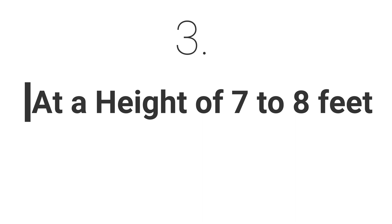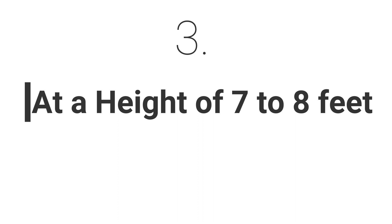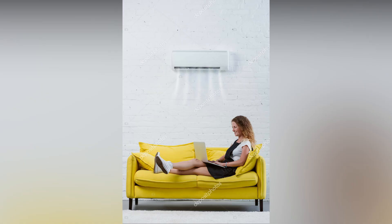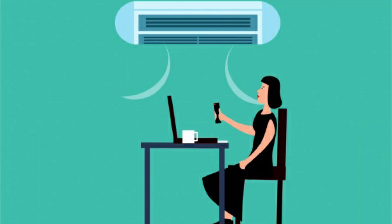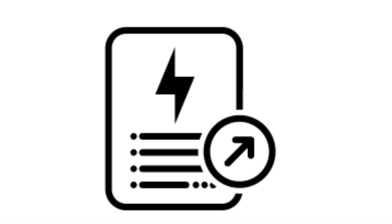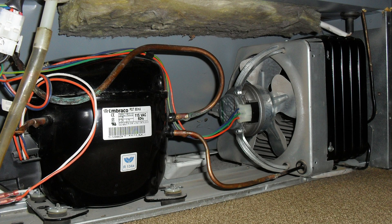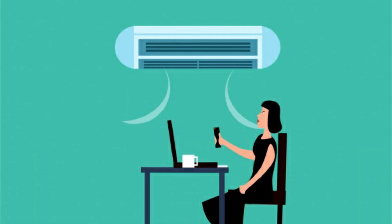Tip number three: install it at a height of 7 to 8 feet. The indoor unit of the AC should be installed at a height of about 7 to 8 feet from the floor, which will give you evenly distributed and circulated air. Sometimes people install it exactly below the slab level with no gap above. Due to this, the AC unit will not get enough warm air to inhale and exhale chilled air with maximum efficiency, leading to extra electricity bills and possible maintenance needs. Place AC at least half a foot gap from the slab level.